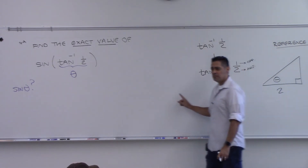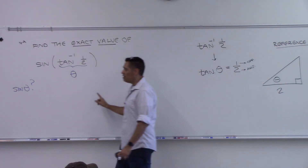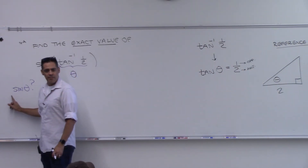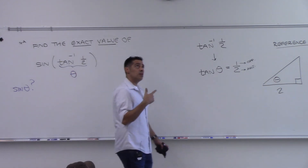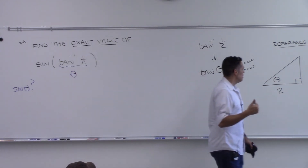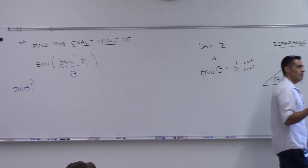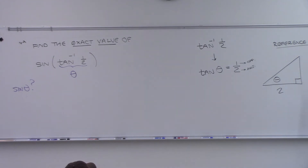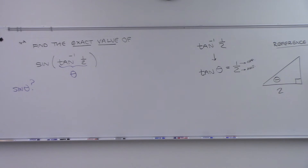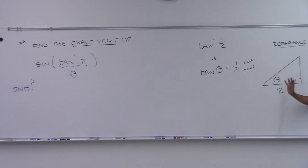We're looking for sine of θ. Sine is opposite over hypotenuse by SOHCAHTOA. I don't know the hypotenuse yet, but I have two sides of a right triangle, so I can always solve for the third side. I'm going to take a moment to solve this triangle completely.